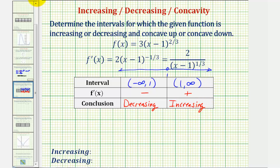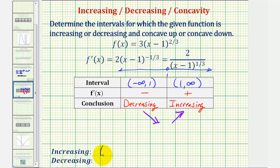Notice how the function changes from decreasing to increasing at x equals one, and therefore we would have a relative minimum at x equals one. The function is increasing over the open interval from one to infinity and decreasing over the open interval from negative infinity to one.